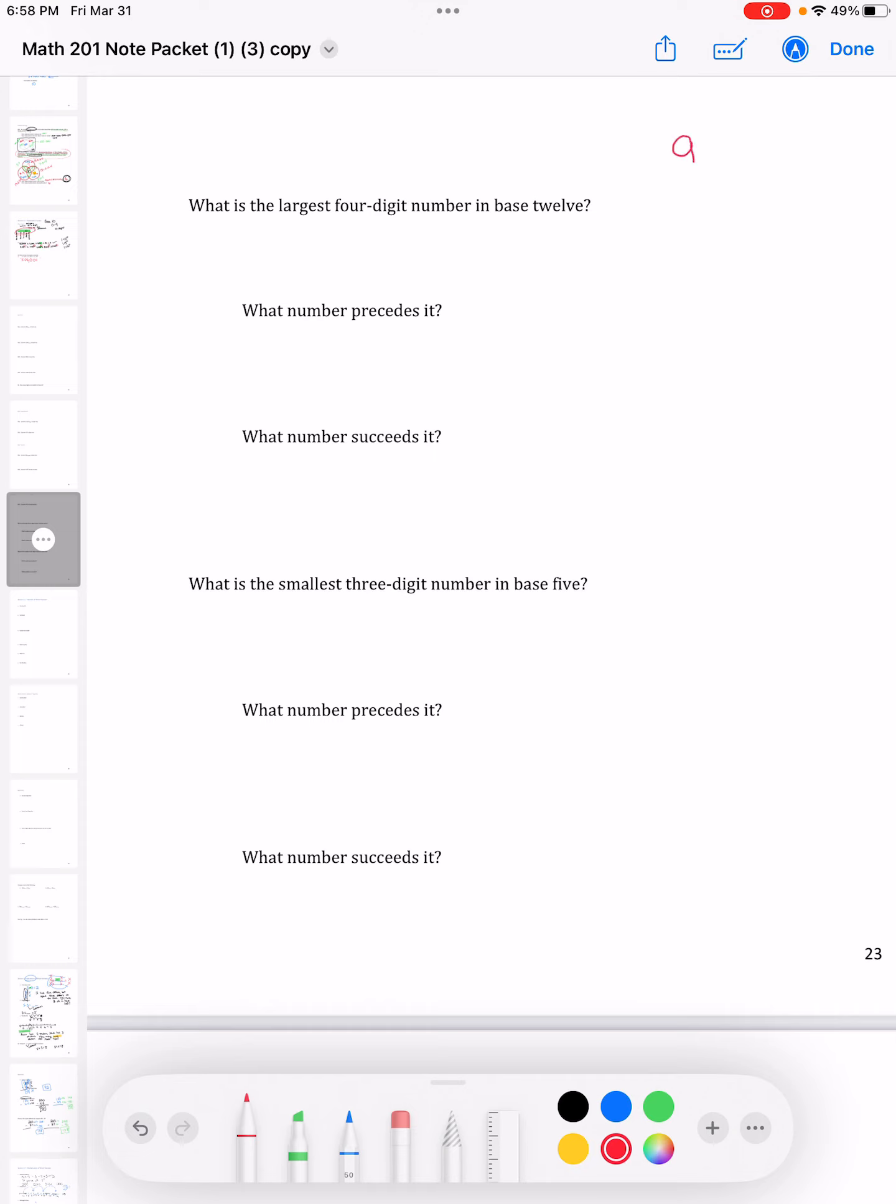A four-digit number might be 9,854. Let me rewrite that five. 9,854. That could be a four-digit number.